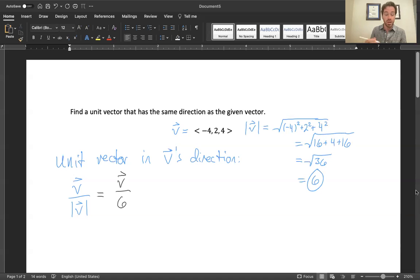Vector v divided by 6. This is most of the way to the right answer, but really what you want to do is write it ultimately as a real honest to goodness vector with the brackets and everything and even bring it inside. So 1 sixth multiplied through would be negative 4 sixths comma 2 sixths comma 4 sixths.